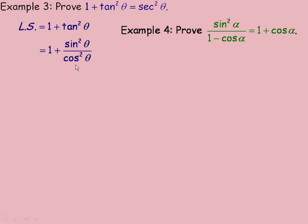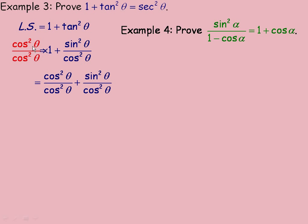We're adding sin²θ / cos²θ to 1, so we want a common denominator of cos²θ. The denominator of 1 is 1, so we multiply 1 by cos²θ over cos²θ. In the numerator we get cos²θ times 1, which is cos²θ, plus sin²θ — each over the common denominator cos²θ. Writing them both over the common denominator gives (cos²θ + sin²θ) / cos²θ.